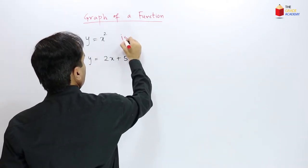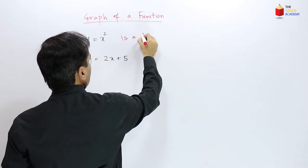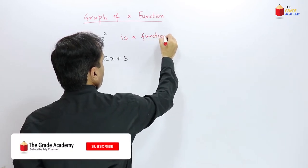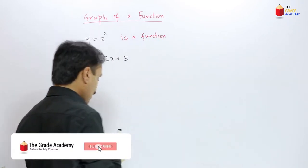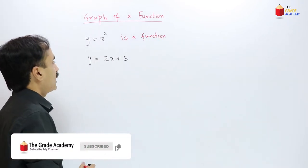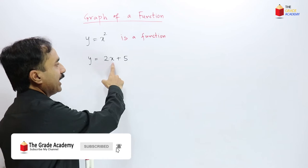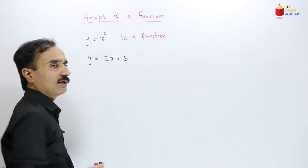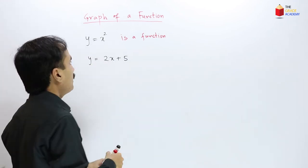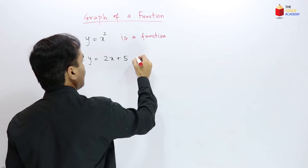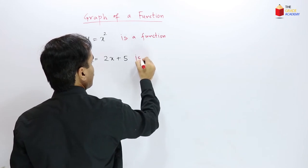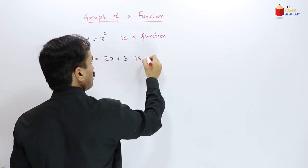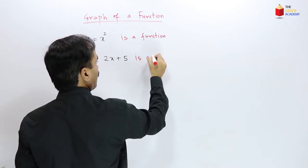This equation is a function. Similarly, in the second equation y = 2x + 5, for every value of x we get only one value of y. So this is also a function. y = 2x + 5 is also a function — here y is a function of x.